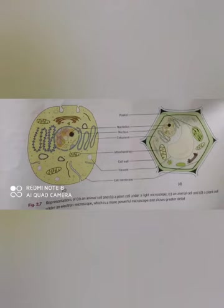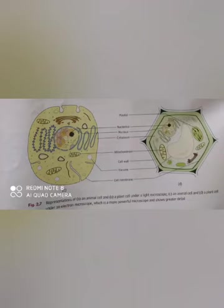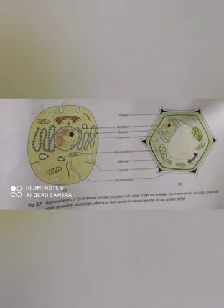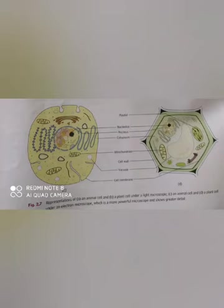Chloroplasts also help in photosynthesis — they trap sunlight, that is solar energy, and with this energy they convert carbon dioxide and water to form food. Chloroplasts are therefore essential not only for the survival of plants but also for the survival of organisms that depend on plants for food — the heterotrophic organisms. All the colored pigments other than green that we see in plants are produced by chromoplasts.